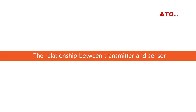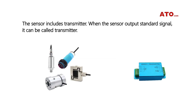What is the difference between a transmitter and an ordinary sender? In fact, transmitters and senders belong to the same category. The difference between them is that the transmitter outputs a standard signal.